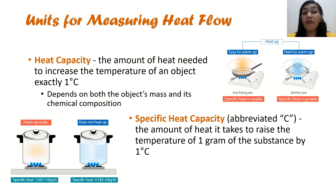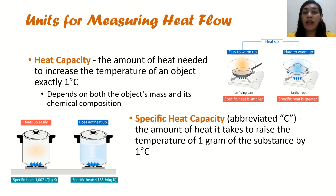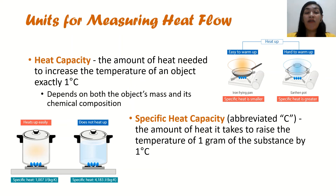You could also measure heat flow through heat capacity and specific heat capacity. Heat capacity is the amount of heat needed to increase the temperature of an object by exactly 1 degree Celsius, and it depends on the object's mass and its chemical composition. As shown in our figure, we have two types of pots — an iron frying pan and an earthen pot (palayok). It would be easier to warm up the iron frying pan compared to the earthen pot because they have different chemical compositions and also a difference in their masses.